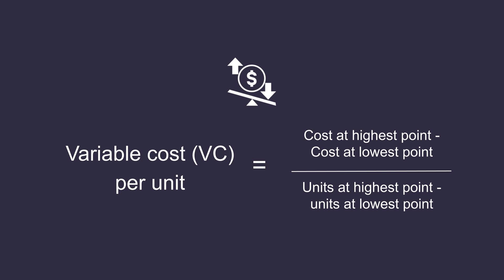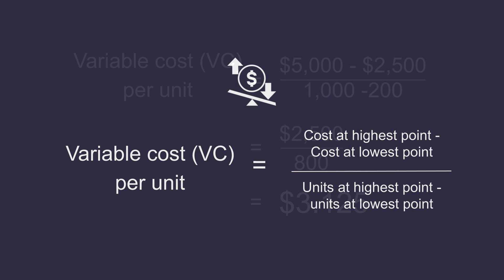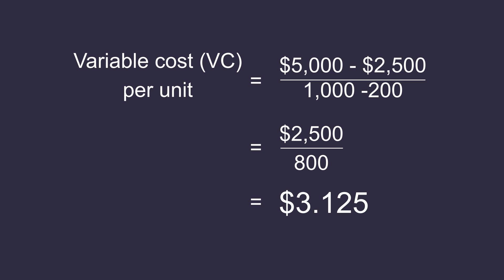The formula to calculate the variable cost per unit will be the highest cost minus the lowest cost divided by the highest activity minus the lowest activity. Thus, the variable cost per unit equals $5,000 minus $2,500 divided by 1,000 units minus 200. So that will give us a total of $2,500 divided by 800. Therefore, the variable cost per unit is $3.12.